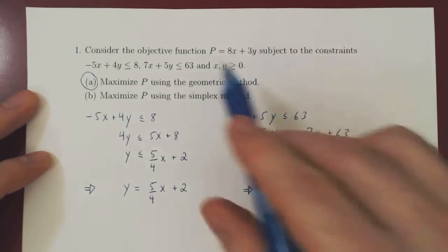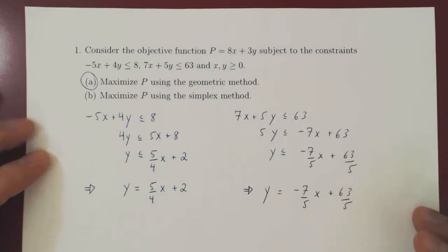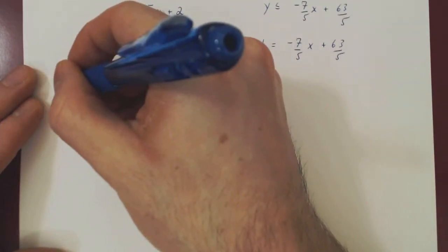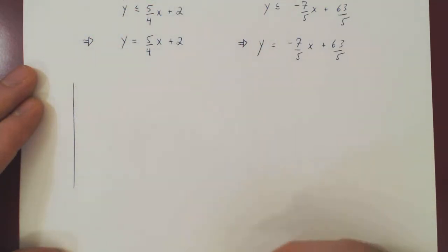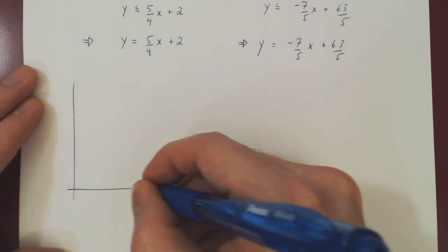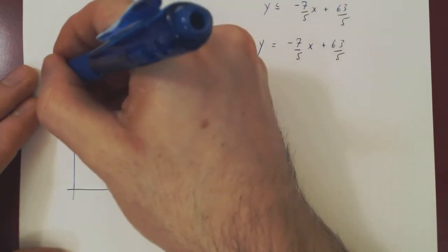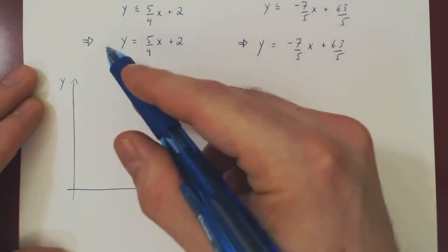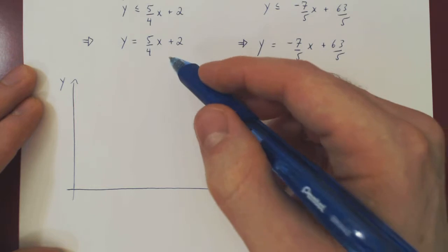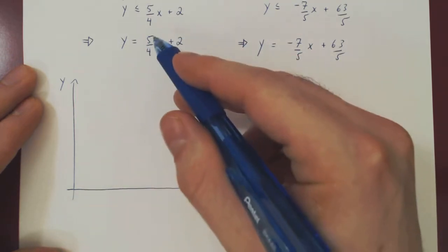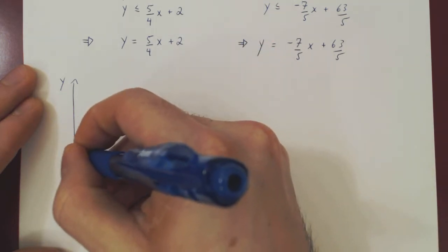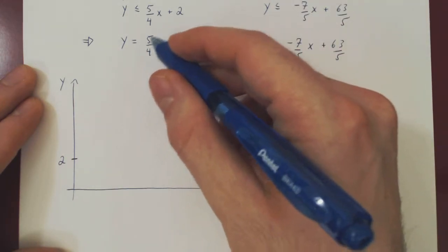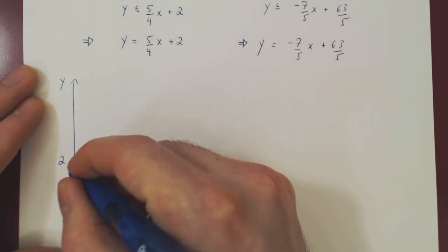Okay, so with these two lines, let's try and sketch our feasible region. And remember, both x and y are non-negative, so we are in the first quadrant of the xy plane. Now, your sketch doesn't have to be accurate or up to scale, as long as you get the general shape of the feasible region, it's all we need. So let's look at this line first.